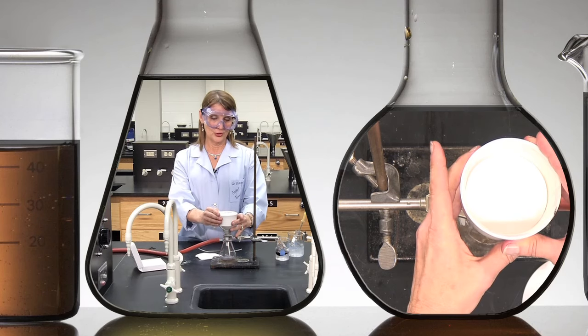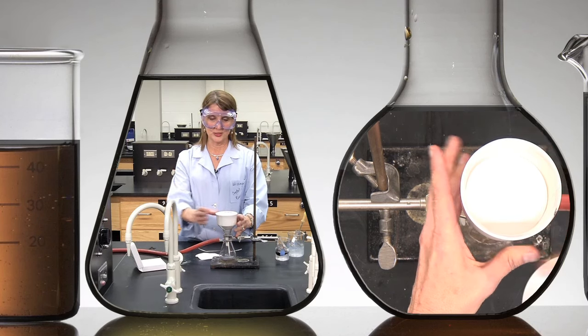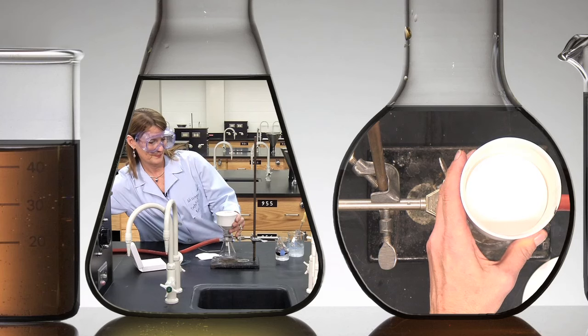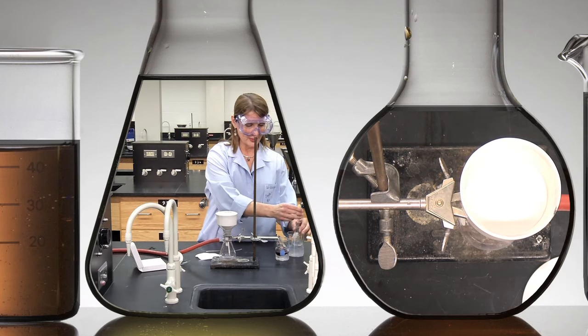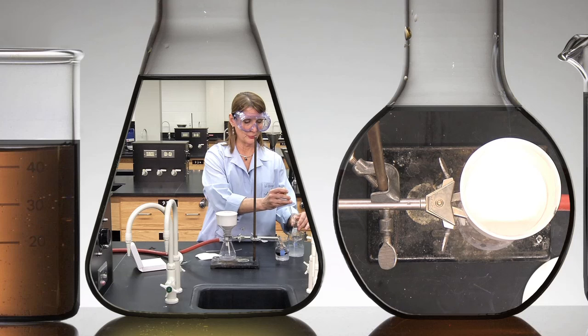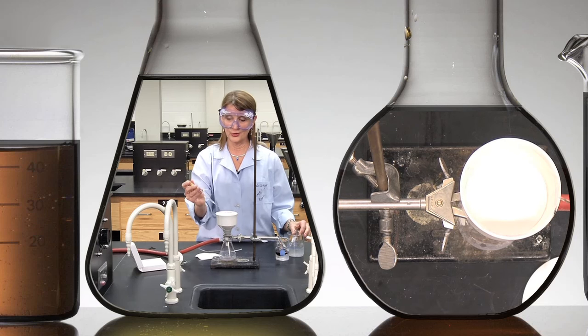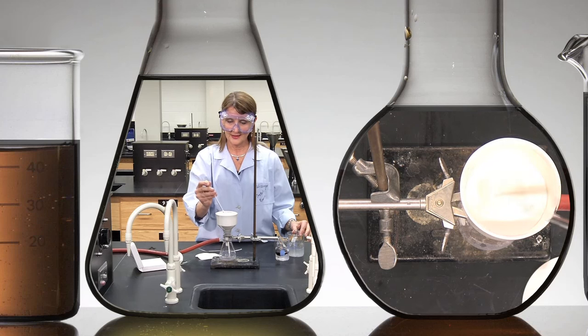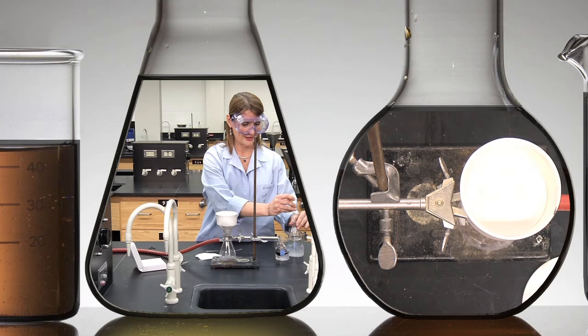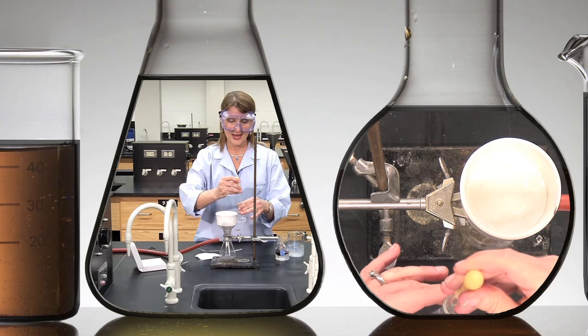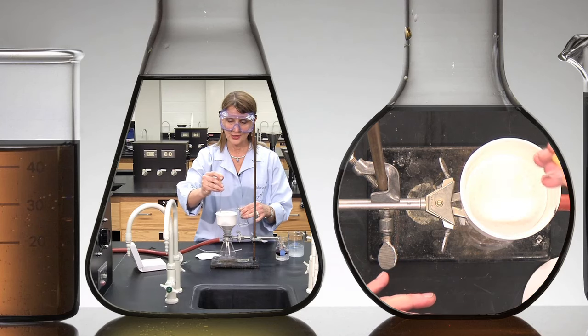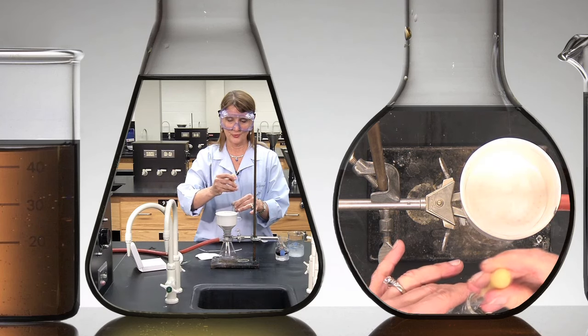In order to start the vacuum filtration, we turn on the vacuum, which you can hear, and then you want to moisten the filter paper with a little bit of a cold solvent that your crystals are not soluble in. This makes sure that the filter paper is adhered tightly and the filter crystals will not go under the filter paper when you filter.